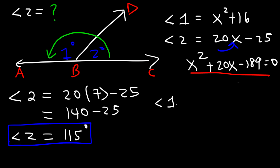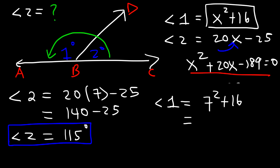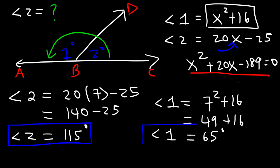115 degrees is the measure of angle 2 and the answer to the problem. Angle 1 is x squared plus 16, which is 7 squared plus 16: 49 plus 16 is 65 degrees. To verify, 115 plus 65 equals 180, confirming our answer is correct.